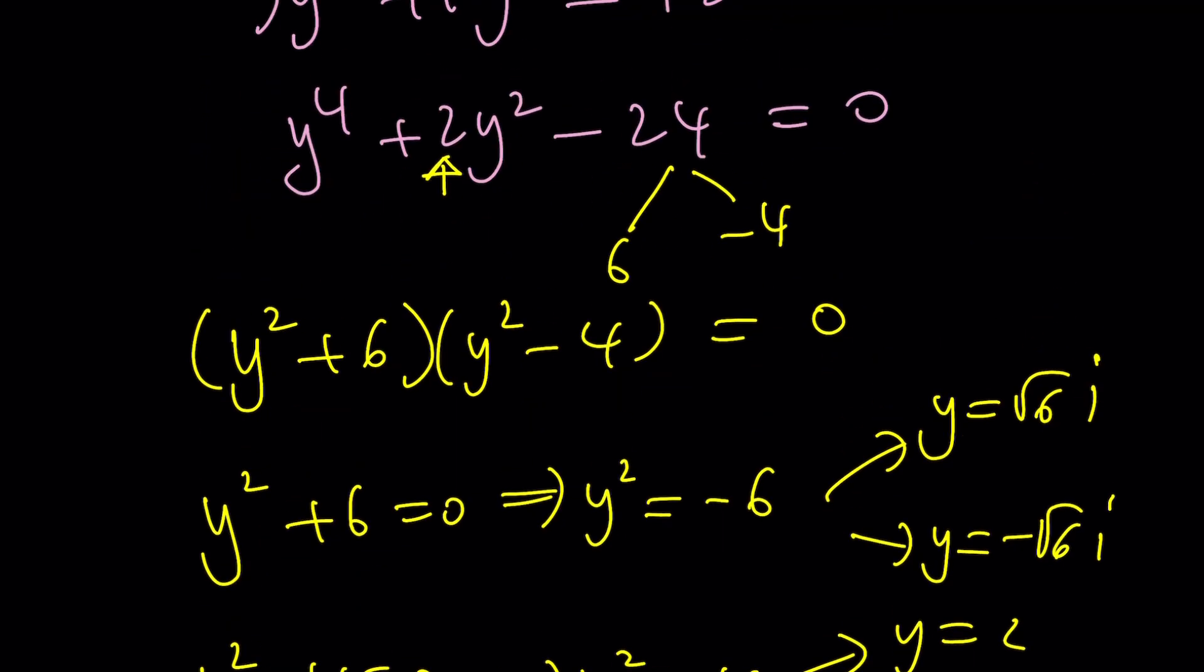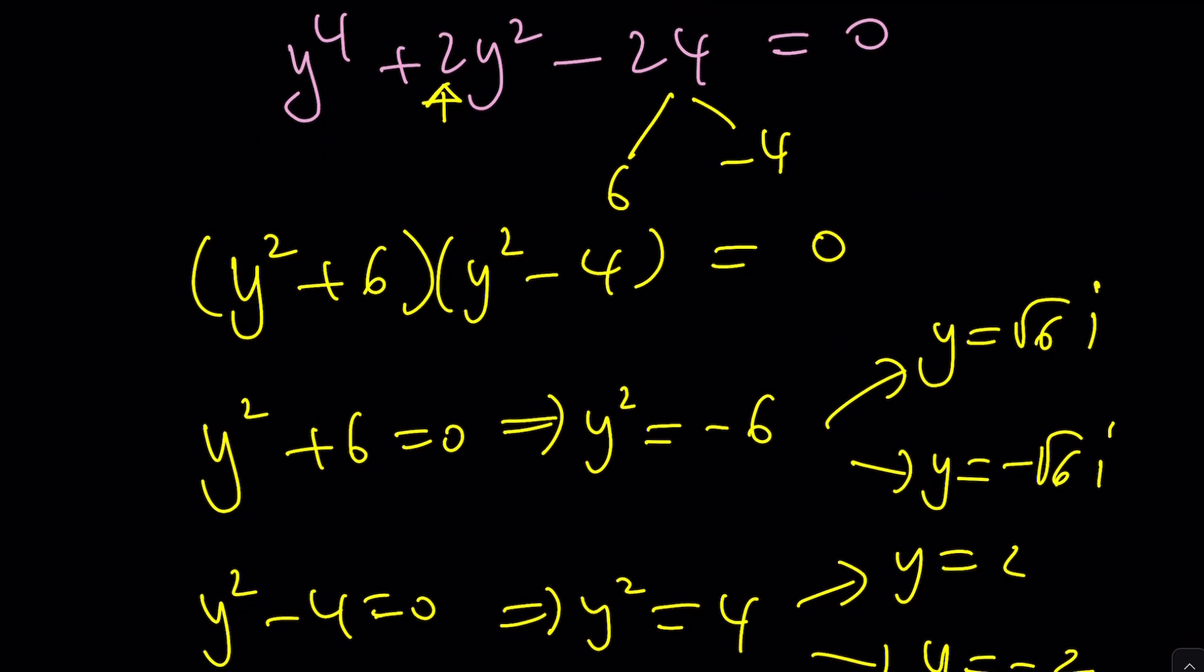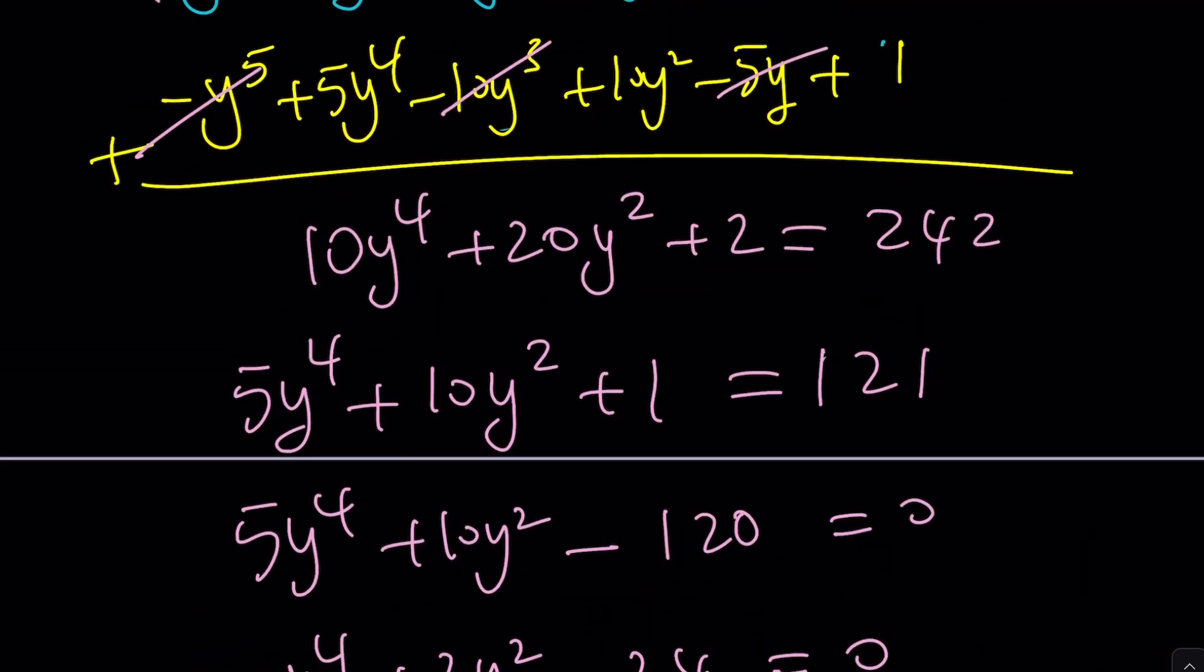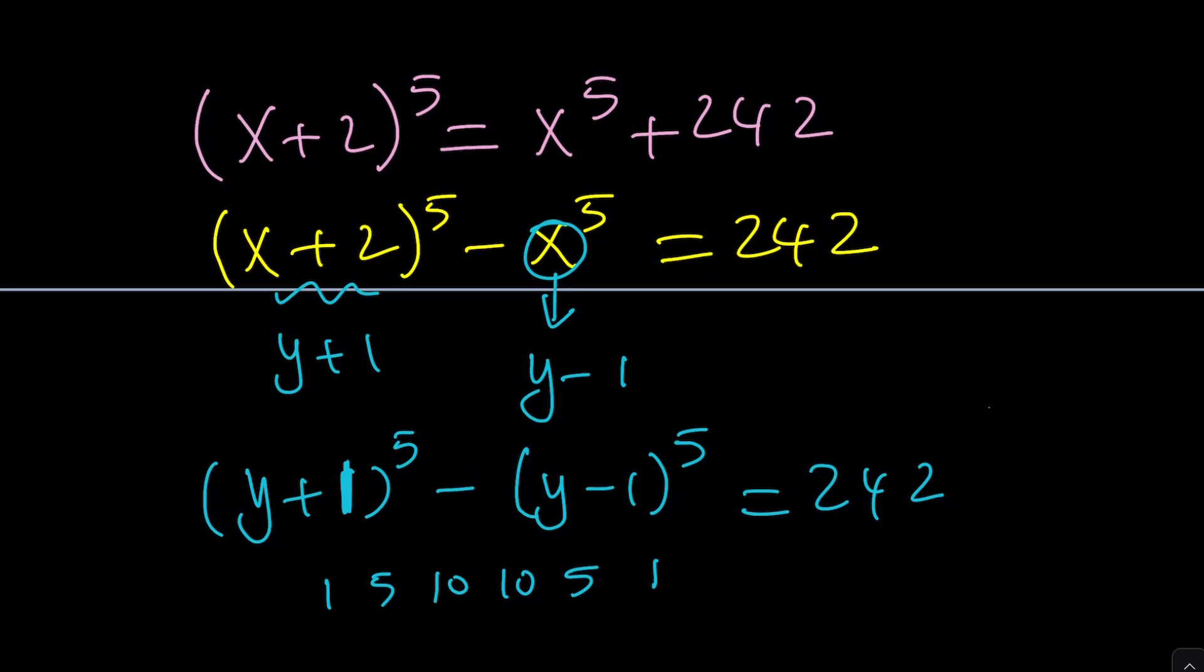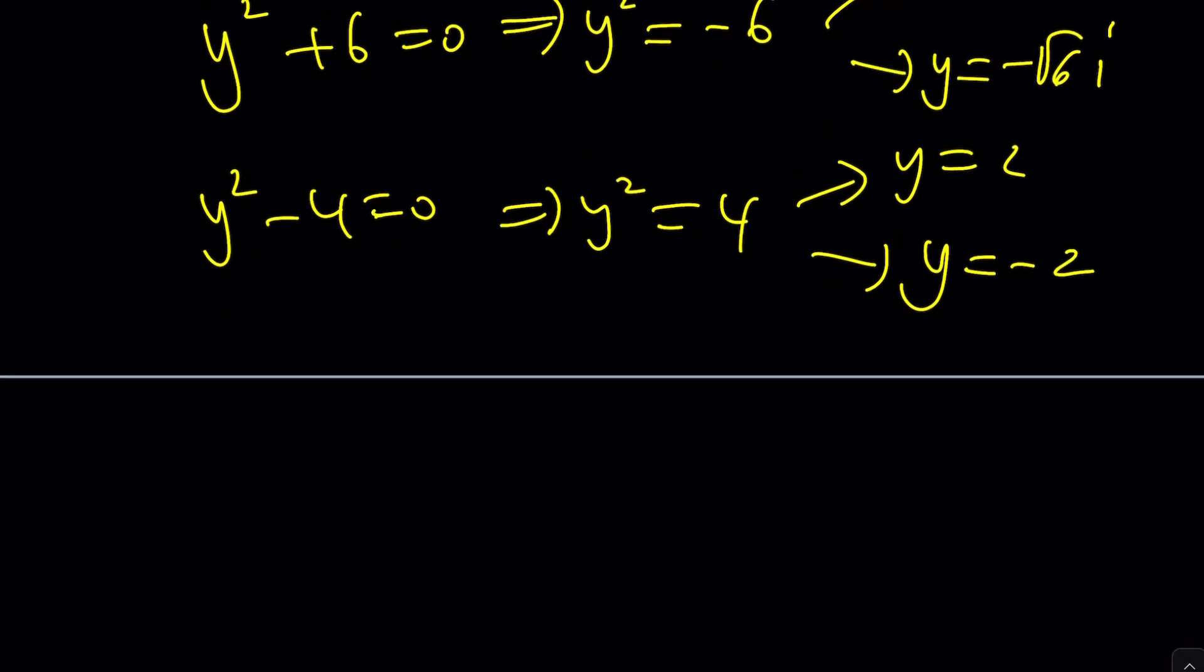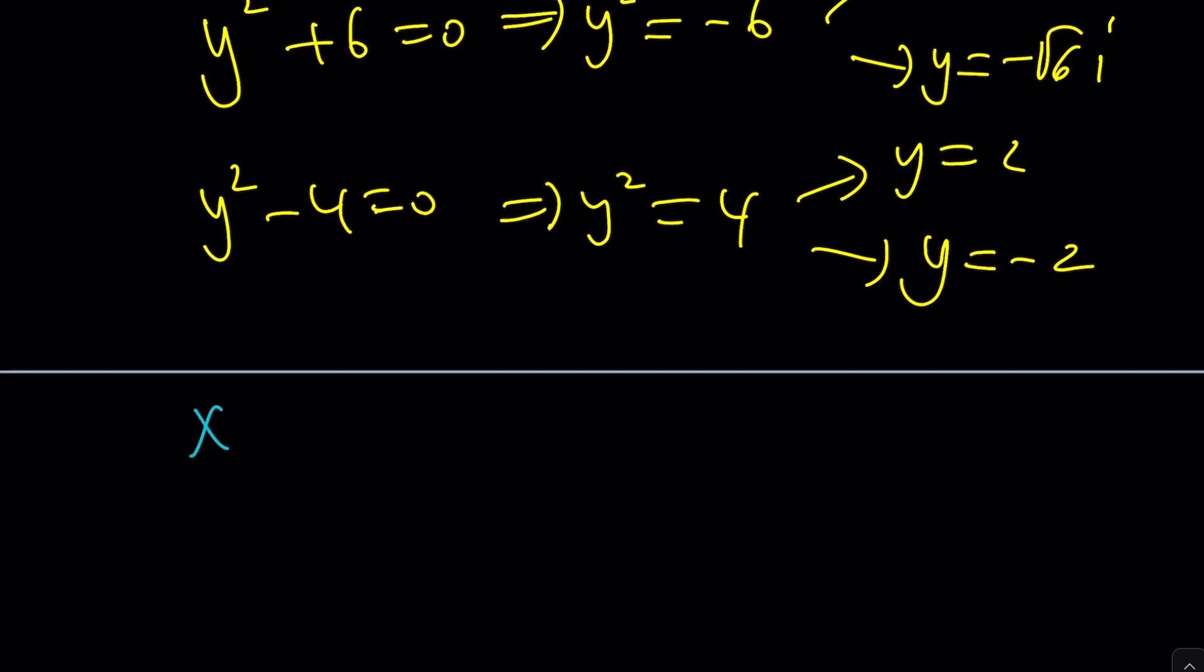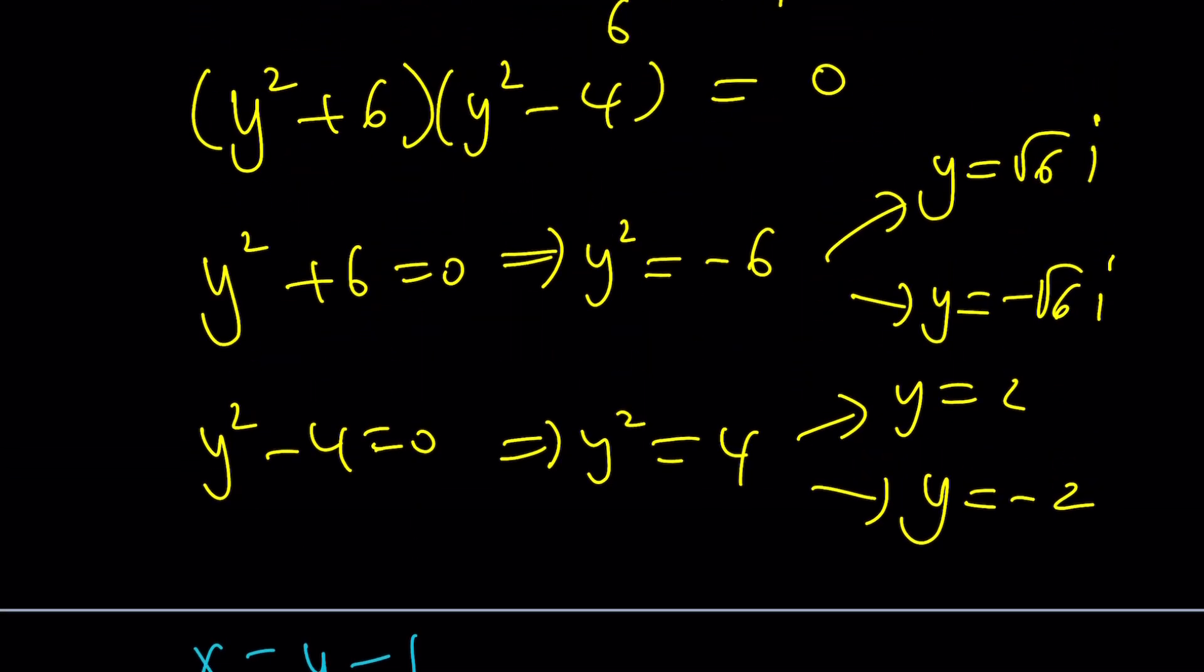Okay, great. So, we got four y values, but y is not the end goal. Y is what? Y is, I forgot. I don't know what y is. I know that x = y - 1. Okay, let's write it down. x is y - 1, which means I'm going to subtract 1 from each of these solutions to get x. That's what matters, right? I don't really care what y is in terms of x because I care about x.